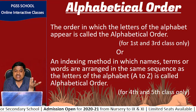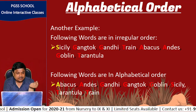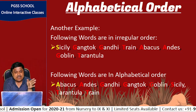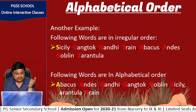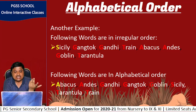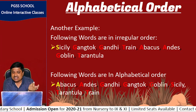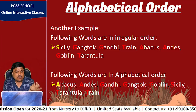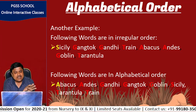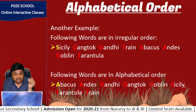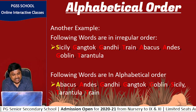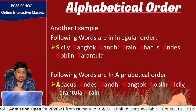Now some more examples have been given. Here some words are given in irregular order: Sicily, Gangtok, Gandhi, Train, Abacus, Andes, Goblin, Tarantula. All these words are in irregular order and now need to be written in alphabetical order.